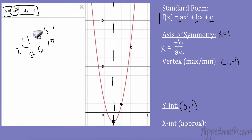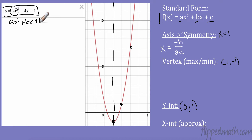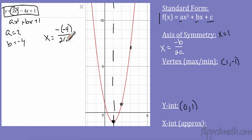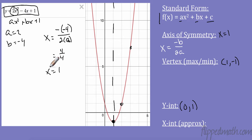So what does negative b over 2a mean? In our function ax squared minus 4x plus 1, a is 2 and b is negative 4. A lot of people freak out about the negative sign. I think of it as: take the opposite of b and divide by 2a. The opposite of negative 4 is positive 4, over 2 times a, which is 2 — so 4 over 4. The axis of symmetry is x equals 1.